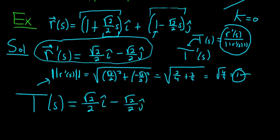All right, so now we just have to compute T prime of S. Well, doing that, we just get 0. This is just equal to the 0 vector. It's 0 i hat minus 0 j hat, which is simply the 0 vector.